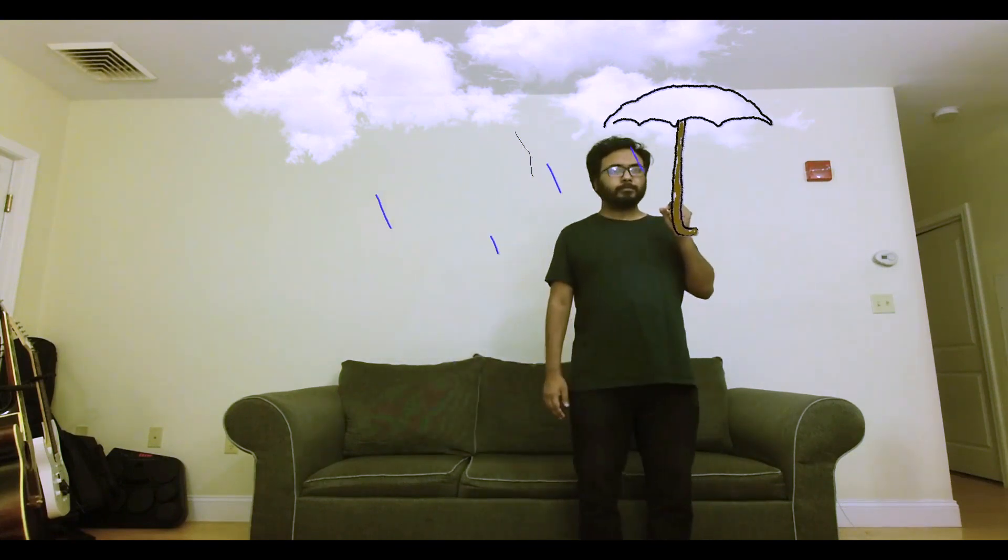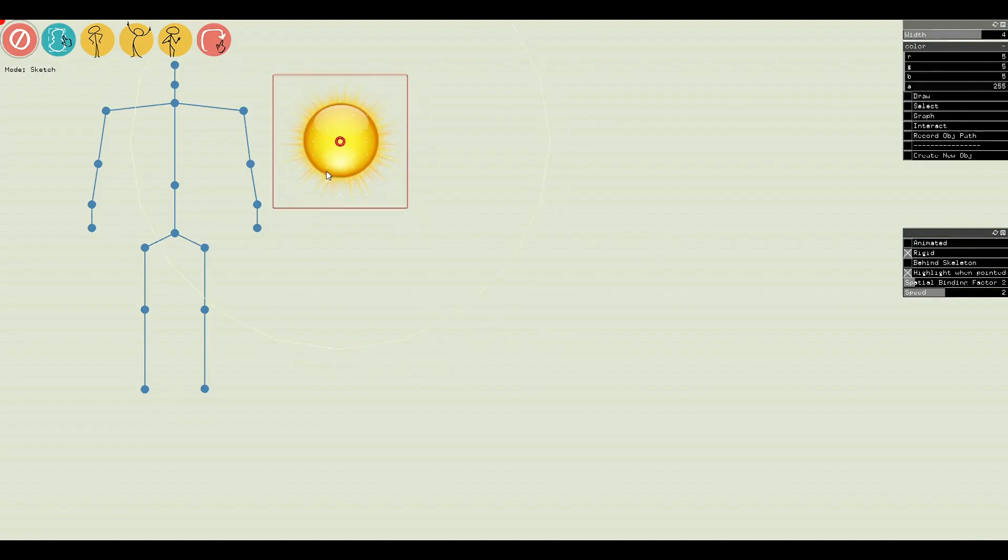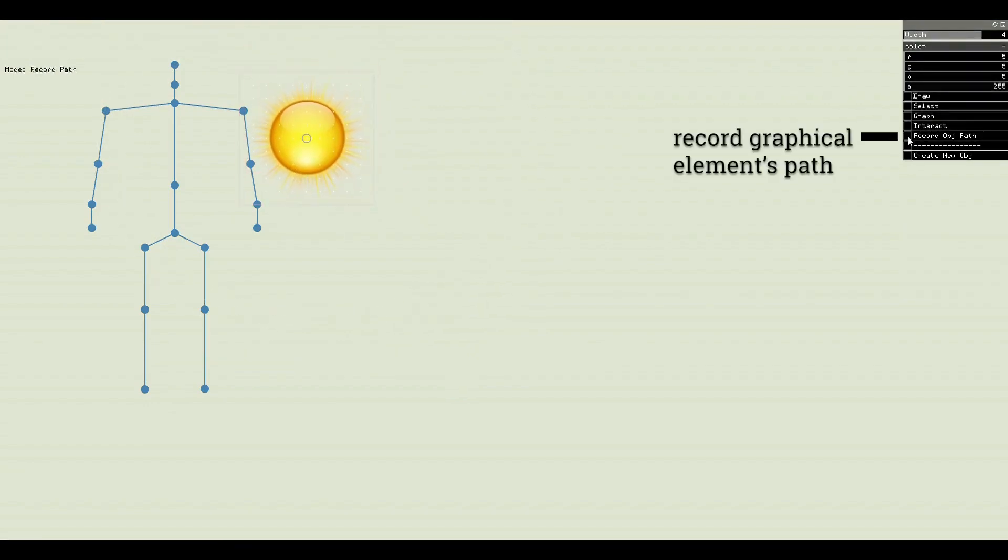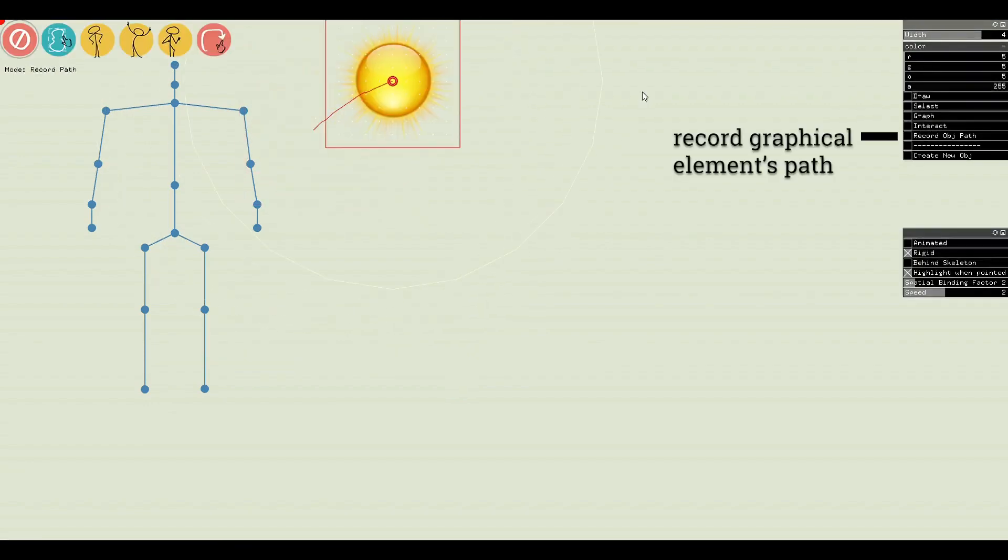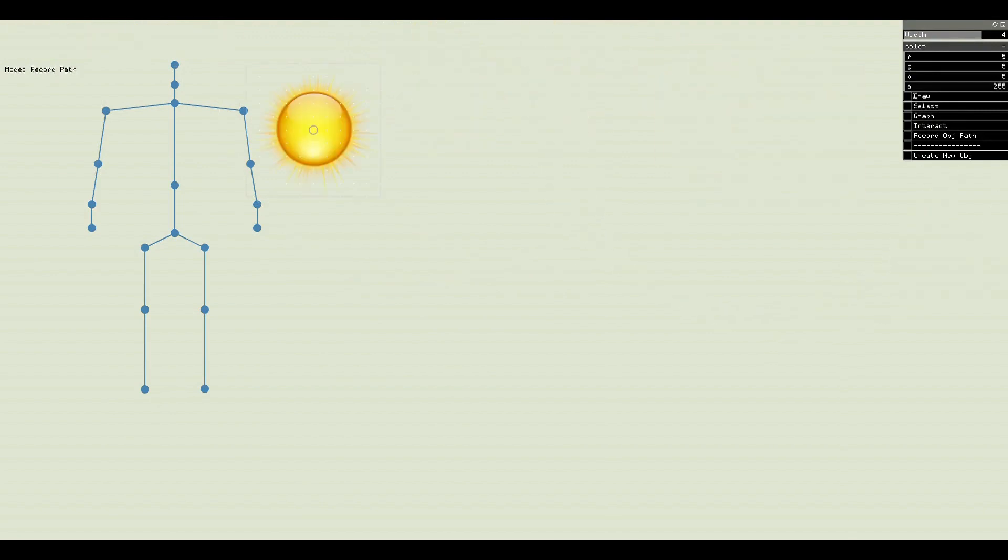The next day is more sunny and warm. Let's create some causal relations between the skeleton and the graphical elements for this story. We want the sun to move along a constraint path that we will parameterize using a causal relationship.